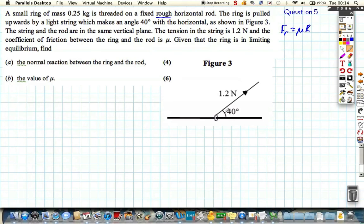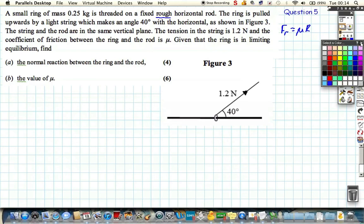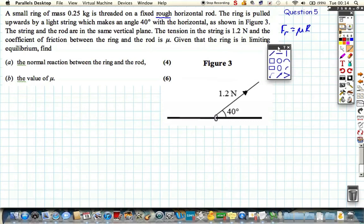We've got the ring being pulled along by a string. Let's get some forces on our diagram. So the ring is in contact with the rod so there's a reaction force. There's also the mass of the ring which is very small but we need to include it nonetheless. The weight of the rod is 0.25g acting down and as the ring is going to move to the right, friction is going to oppose the motion and I'm going to call this f little r for friction.